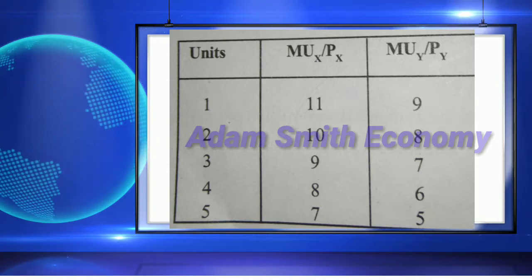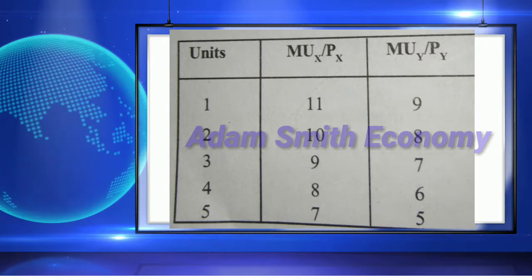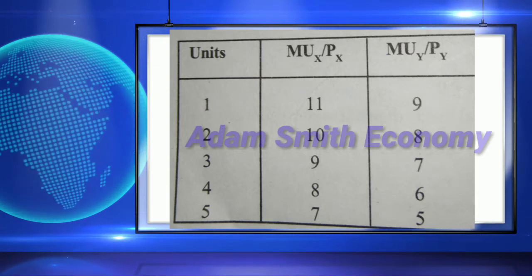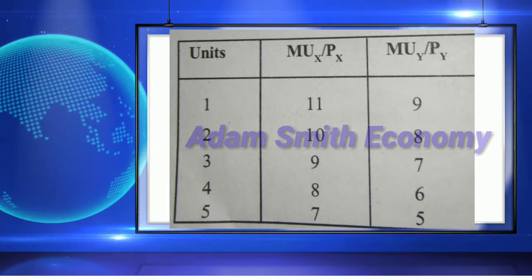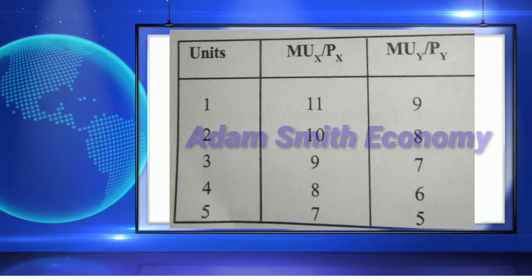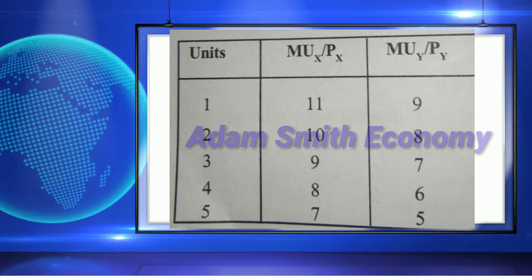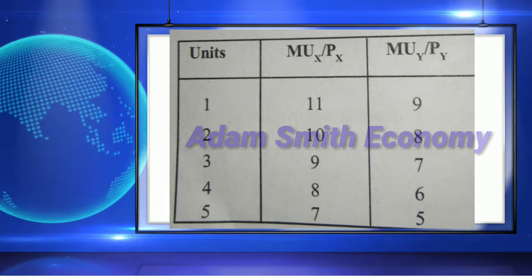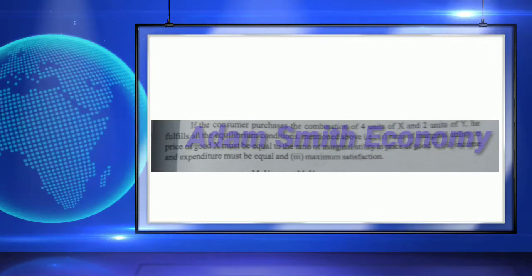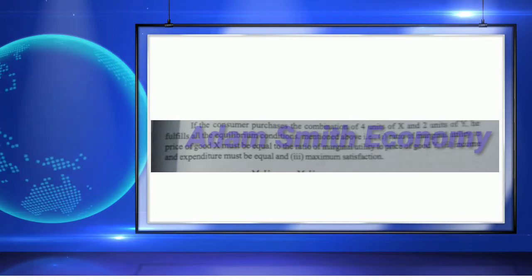If the consumer purchases the combination of units of X and 2 units of Y, he fulfills all the equilibrium conditions. The ratio of marginal utility to price of goods X must be equal to the ratio of marginal utility to price of goods Y. Second, income and expenditure must be equal, and third, maximum satisfaction is achieved.